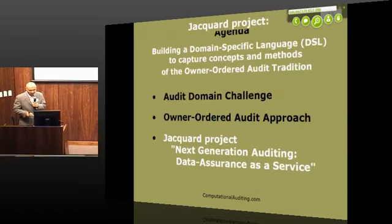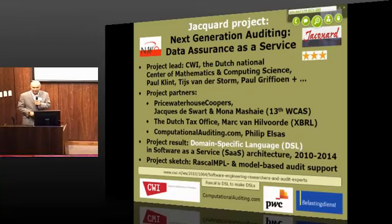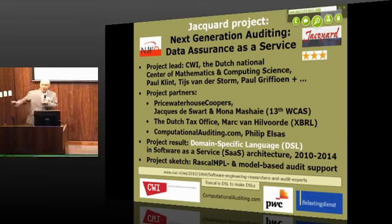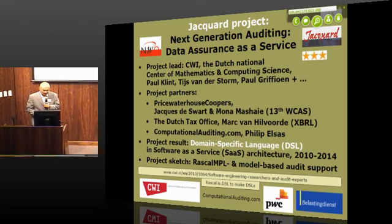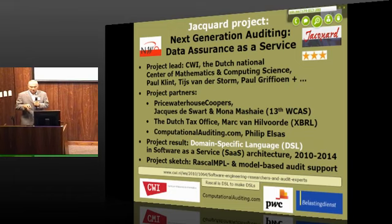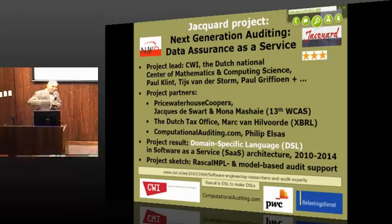The Jacquard project is led by the Dutch Center of Mathematics and Computer Science, with project partners PricewaterhouseCoopers, the Dutch Tax Office, and my company, focusing on a domain-specific language. We make several layers: there will be an open source layer and a public domain layer available for everybody. My company is making some of our software open source. On top of that layer, there can be commercial applications as plug-ins. The Dutch National Center has a special language to build languages — a DSL to make domain-specific languages — so it's a bootstrapping approach that speeds things up, and it's already proven over decades.